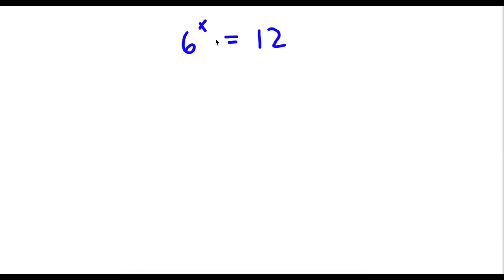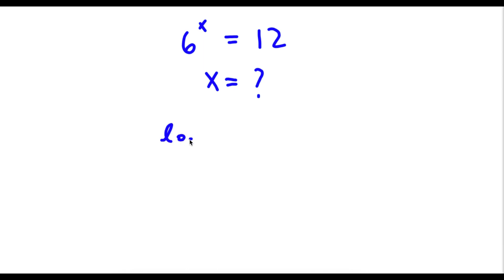Alright, so I have 6 to the power of x is equal to 12. Now I want to find the value of x. So the first thing I'm going to do is take the log on both sides. So now I have log 6 to the power of x is equal to log 12.